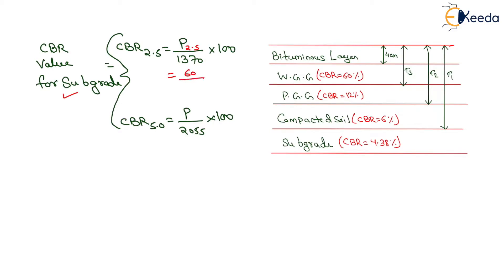So the formula gives: 60 divided by 1370, multiplied by 100, and the CBR value equals 4.38%.